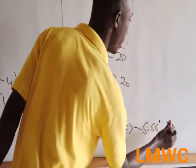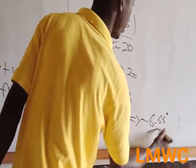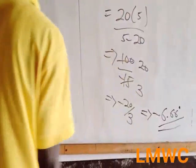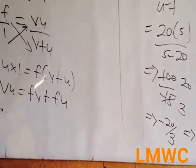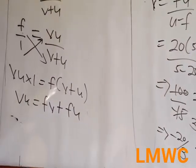Converting to decimal, it becomes negative 6.67. That's the answer. So change of subject is not difficult.